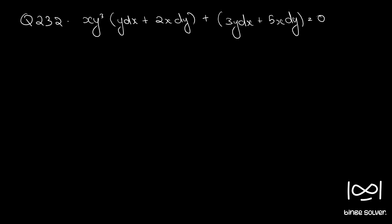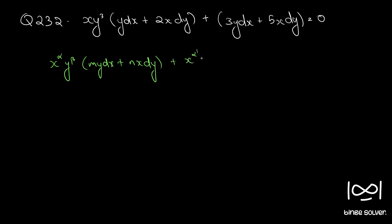Question number 232. The equation is: xy cube into y dx plus 2x dy plus 3y dx plus 5x dy equal to 0. The given differential equation is in the form x raise to alpha into y raise to beta into m y dx plus n x dy plus x raise to alpha dash into y raise to beta dash into m dash y dx plus n dash x dy. For such a differential equation, the integrating factor will be of the form x raise to h into y raise to k.